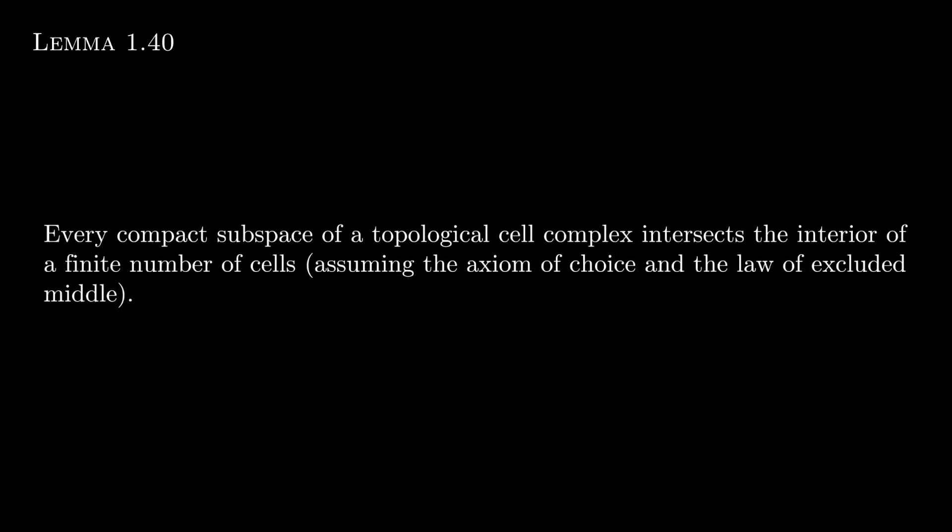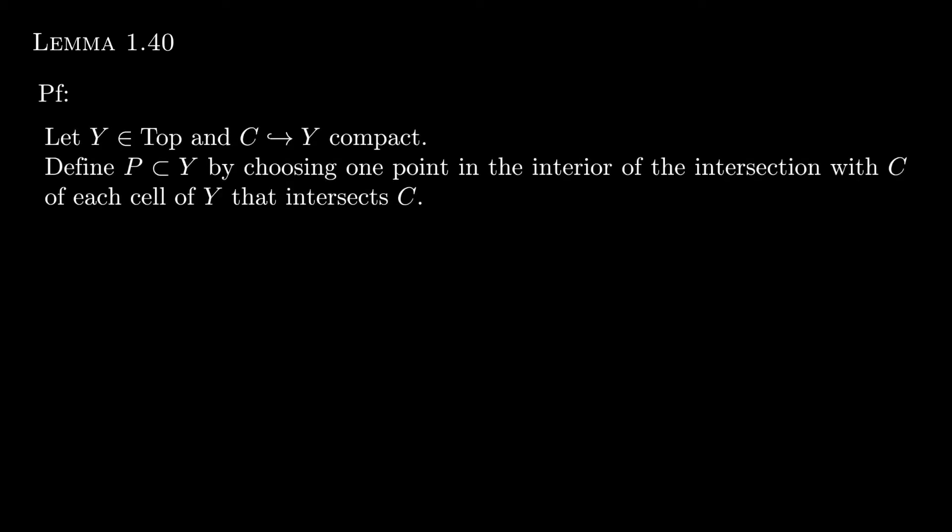Our next result is a technical one which we will use later in the proof of another lemma. It says that every compact subspace of a topological cell complex intersects a finite number of cells. So let's start with the proof. We want to start by choosing a topological space Y and a compact subset of it. Then we want to pick a subset P of Y by choosing one point in the interior of the intersection with C of each of the cells of Y that intersects C. So if C intersects five cells, we would have five elements of P. And the reason we're doing this is the observation that compact implies complete.